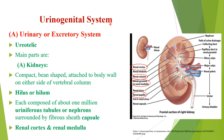Now we will discuss the urinogenital system. This system is formed of two intimately related systems: the urinary or excretory system and the reproductive system. We will discuss the urinary or excretory system first. Rat is a ureotelic organism — its main excretory product is urea, and such animals are called ureotelic organisms.